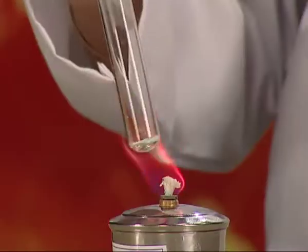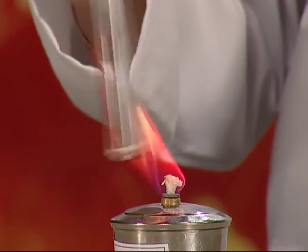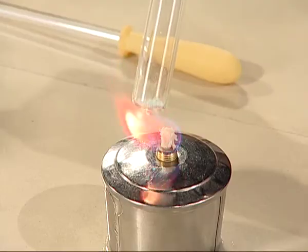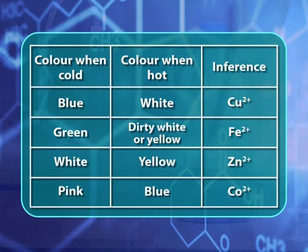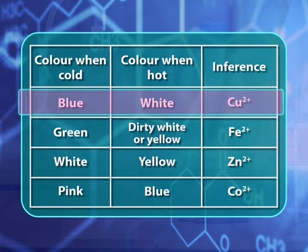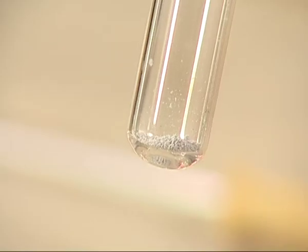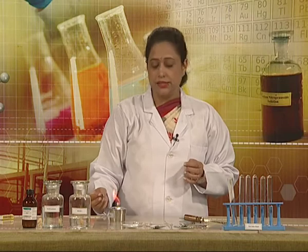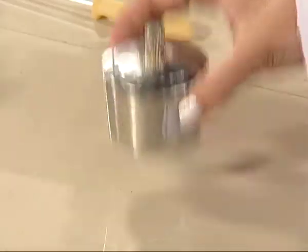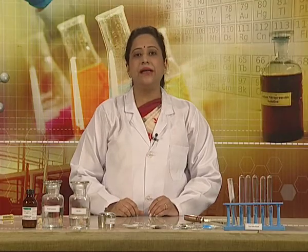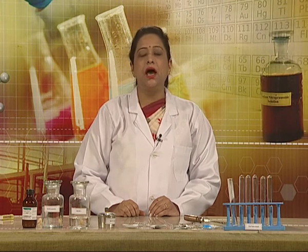As we can clearly see, on dry heating, the color of the copper salt has changed from blue to white. Thus, preliminary examination helps us to indicate the presence of the cation in the given salt. We shall now proceed to the wet analysis. After this, systematic confirmatory identifications are made by preparing the solution of the salt.